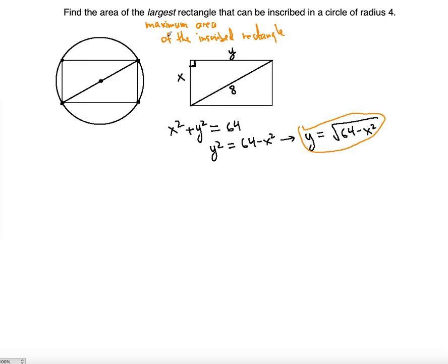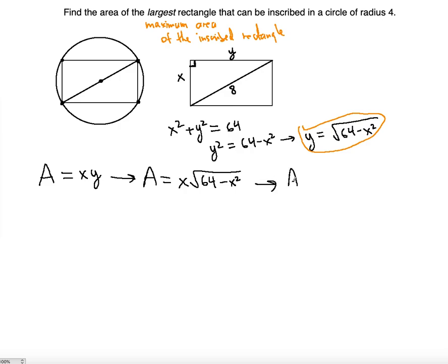Now we've found y in terms of x — but where are we going? We need to maximize the area. The area is x times y. In order to find a derivative and maximize, you have to have only one variable, since this is optimization, not related rates — no implicit differentiation. So y must be replaced with x. The area as a function of x is A(x) = x times the square root of 64 minus x squared.